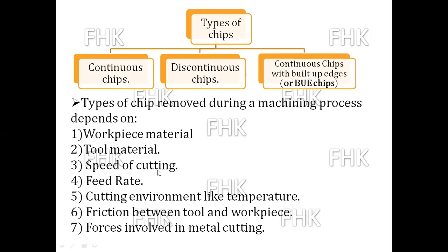The third factor is cutting speed — the speed at which the tool cuts the material. The fourth factor is feed rate — the speed at which the tool advances towards the workpiece. The fifth factor is the cutting environment, such as temperature. The sixth factor is friction between the tool and workpiece, and the last factor is the force or pressure involved in metal cutting.